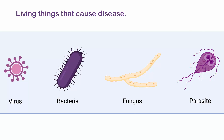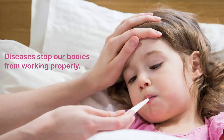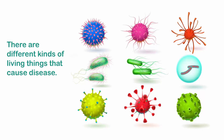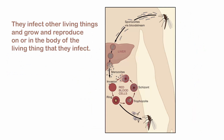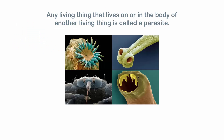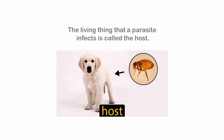Living things that cause disease stop our bodies from working properly. There are different kinds of living things that cause disease. They infect other living things and grow and reproduce on or in the body of the living thing that they infect. Any living thing that lives on or in the body of another living thing is called a parasite. The living thing that a parasite infects is called the host.